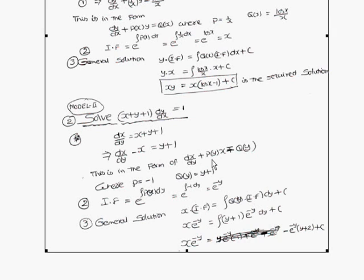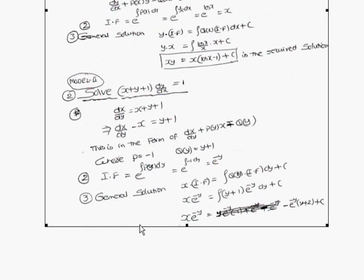Comparing with the standard form, P equals minus 1 and Q(y) equals y plus 1. The integrating factor is e to the power of the integral of P(y) dy, which is e to the power of the integral of minus 1 dy, giving e to the power of minus y. The general solution is x times e to the minus y equals the integral of (y plus 1) times e to the minus y dy, plus c.